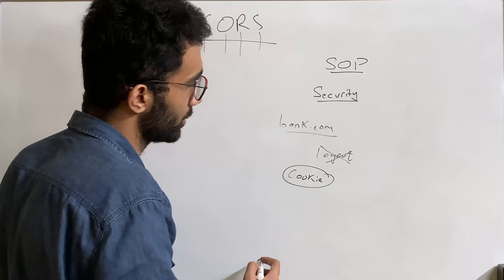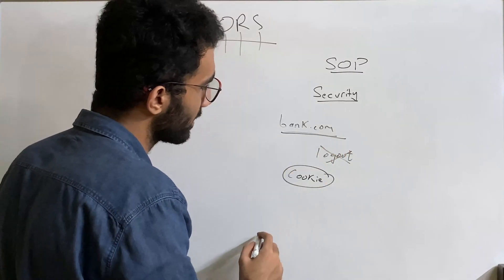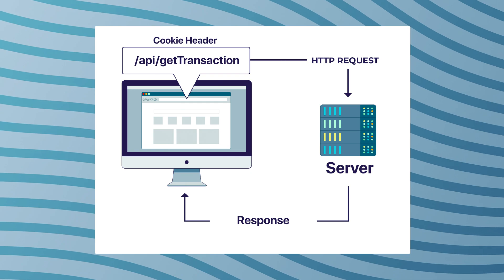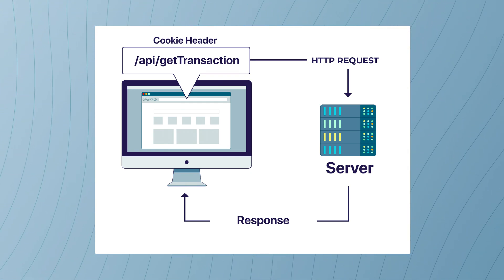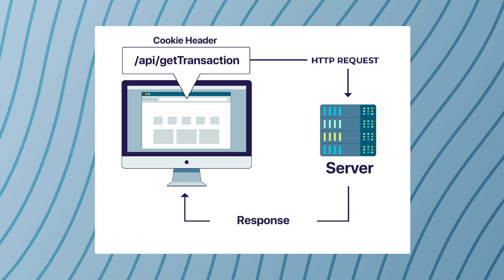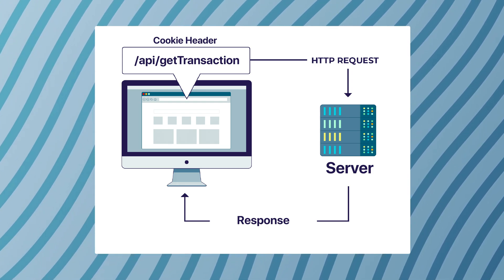This is fine, this is great user experience, but the reason the browser is able to do that is because when you land on bank.com and let's say this bank.com sends an API, for example API slash get transaction, when it calls this API your browser automatically sends that cookie header with your legit value.